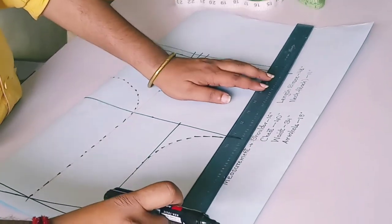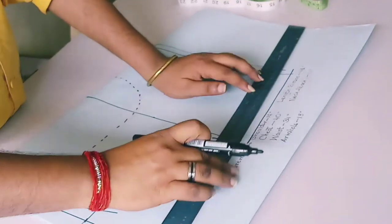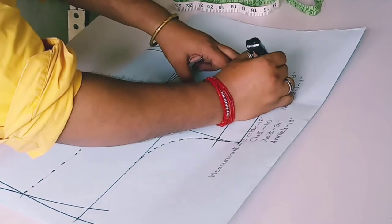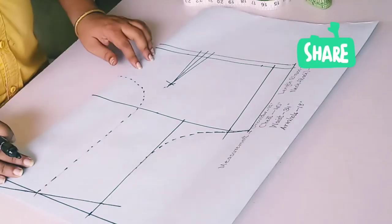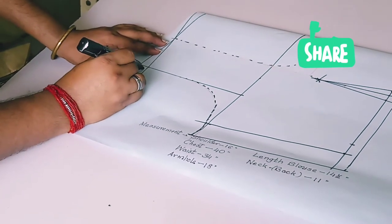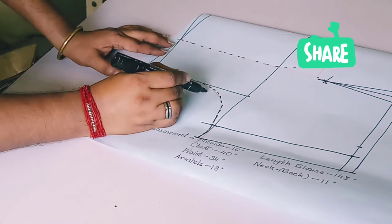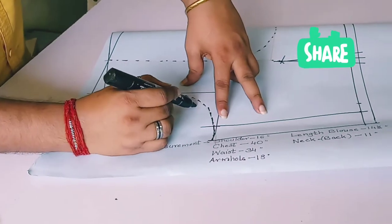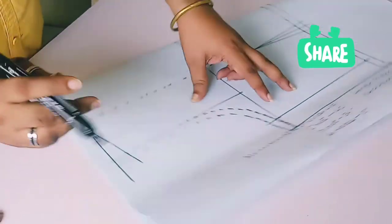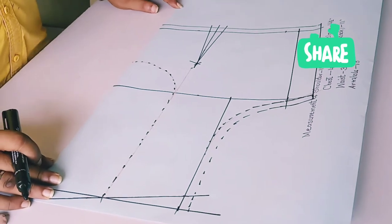Now for side margin you have to mark one inch extra. Neckline here you take one centimeter extra for cutting. From shoulder to armhole you have to take one centimeter extra inside, one inch at base also.